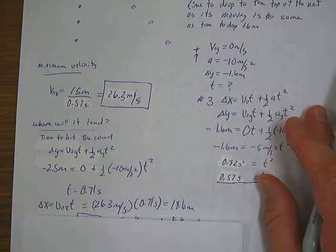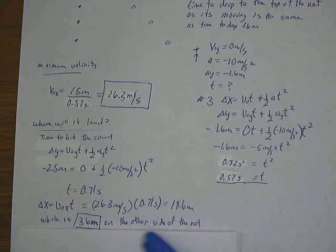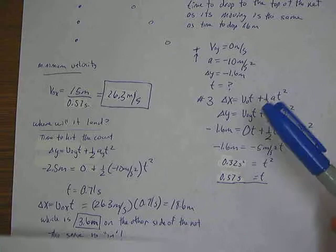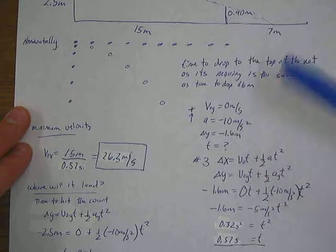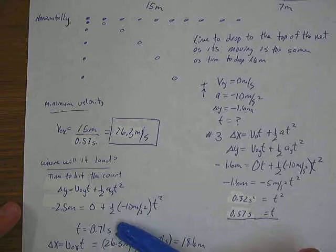And since the net is only 15 meters away from the server, that means it's going to travel 3.6 meters past the net or to the other side of the net. And so that's the answer for that one. And so the serve is in because it's well within the seven meter range I have on the other side of the net there.